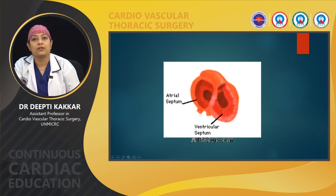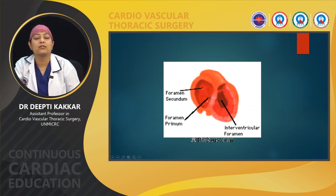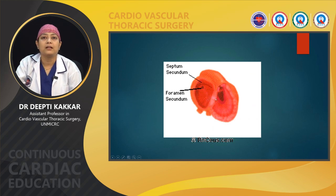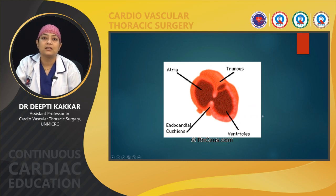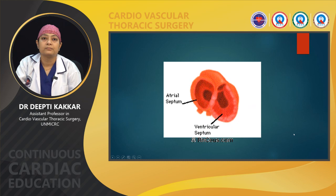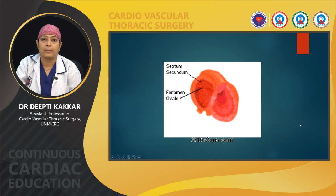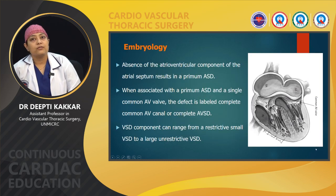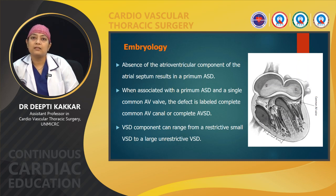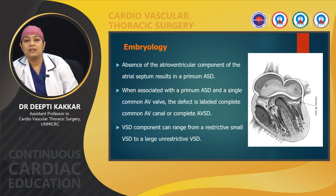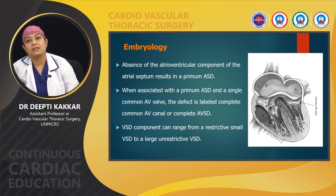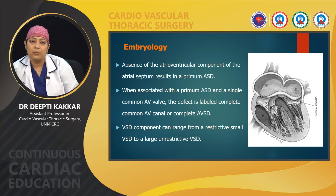Here we can see the development of the endocardial tube cushions, and the remnant of the foramen primum. When the AV cushion does not develop in this area, it leads to the formation of an inlet VSD. The absence of the atrioventricular component of the atrial septum results in the formation of a primum ASD. When associated with a single AV valve, the defect is known as a complete AV canal defect or complete AV septal defect.